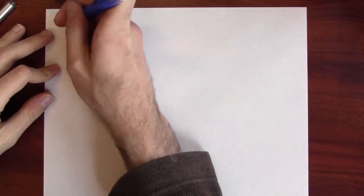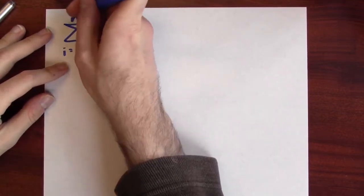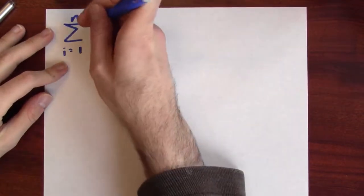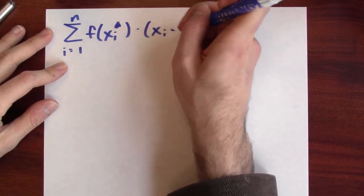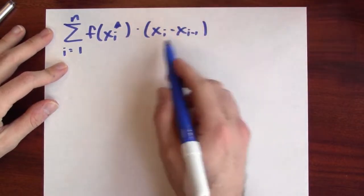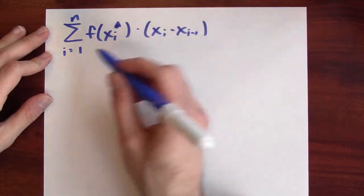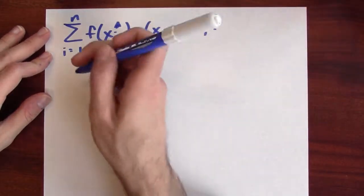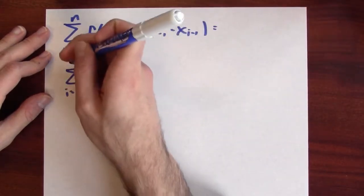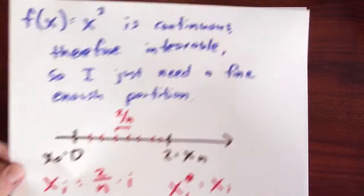Now, in general, the formula for Riemann sum is the sum, i goes from 1 to n, of the function evaluated at the i-th sample point times the width of the i-th sub-interval in my partition. This is the area of the rectangle, and I'm adding up all those rectangles to get an approximation to the area under the graph. Well, in this specific case, what do I have? x sub i star is the same thing. If I go back to this, x sub i star is the same thing as x sub i.